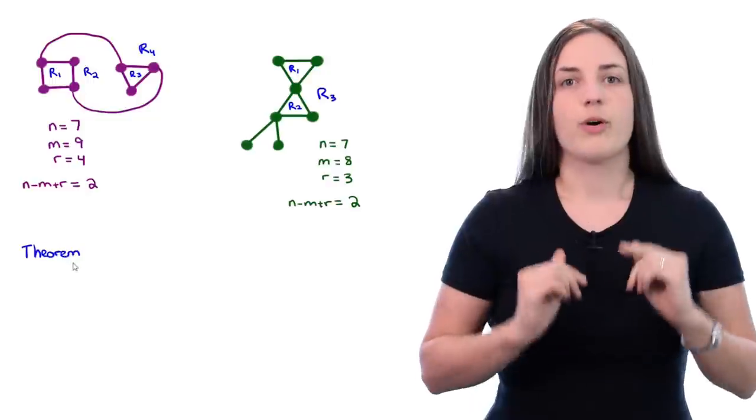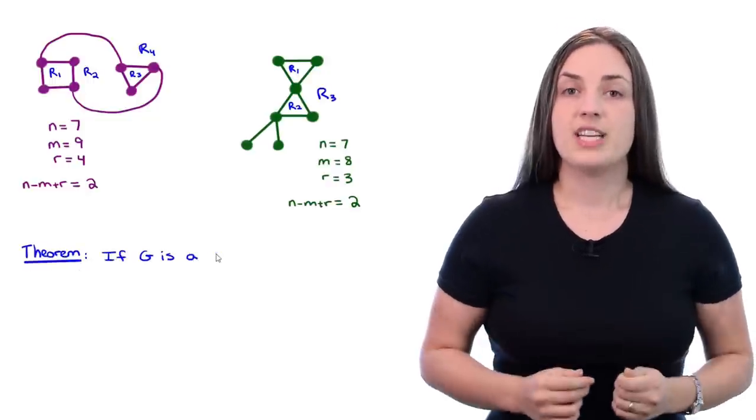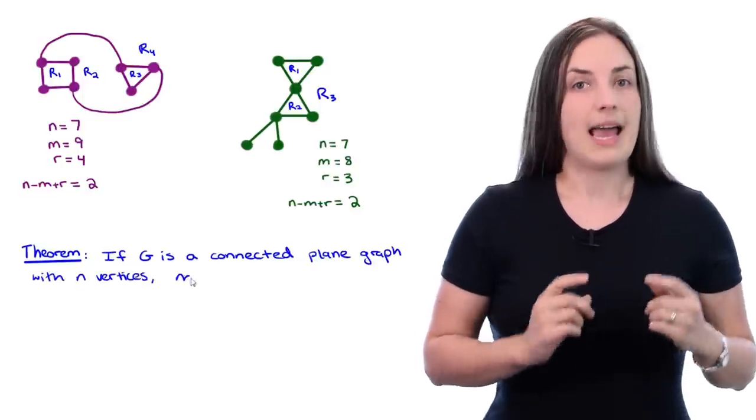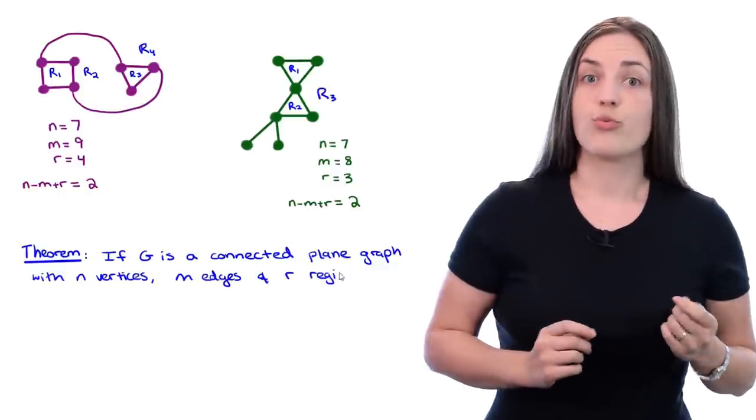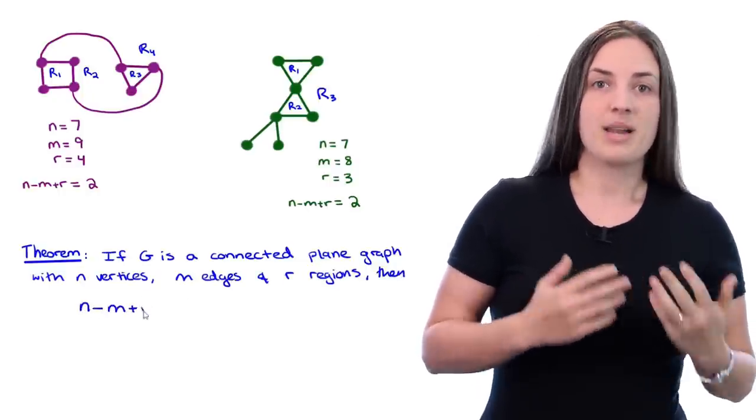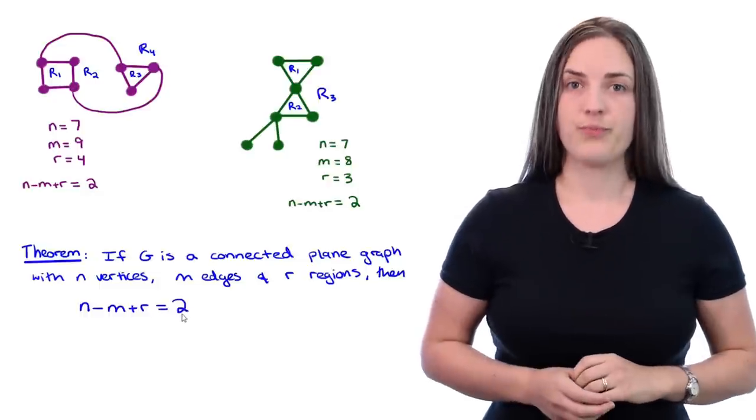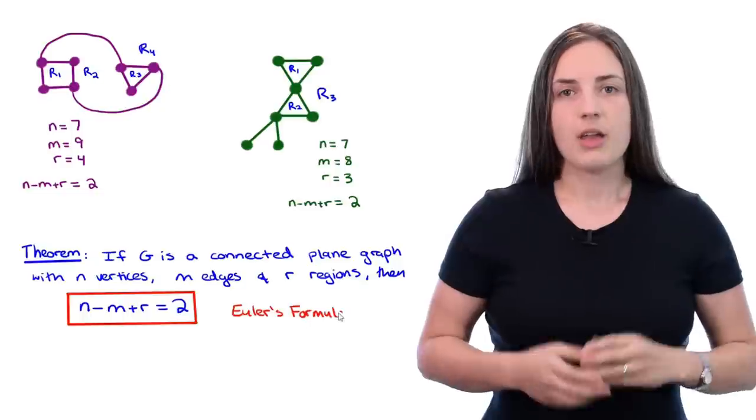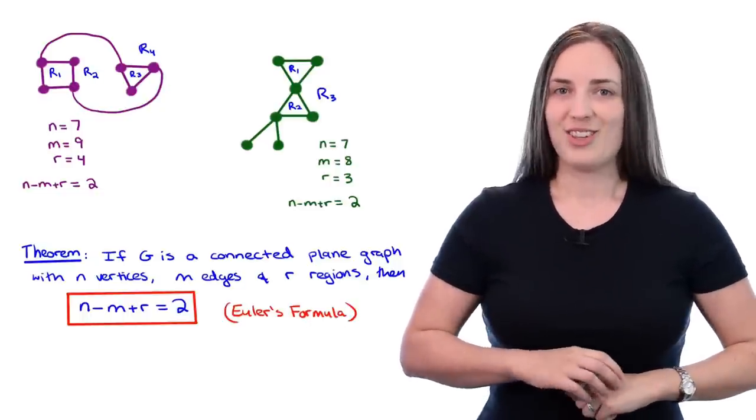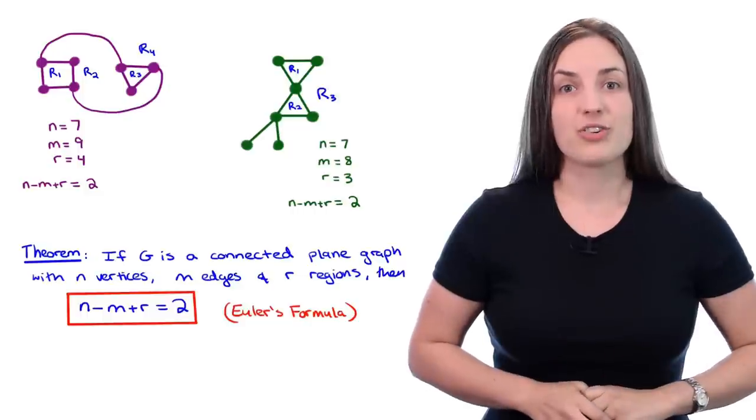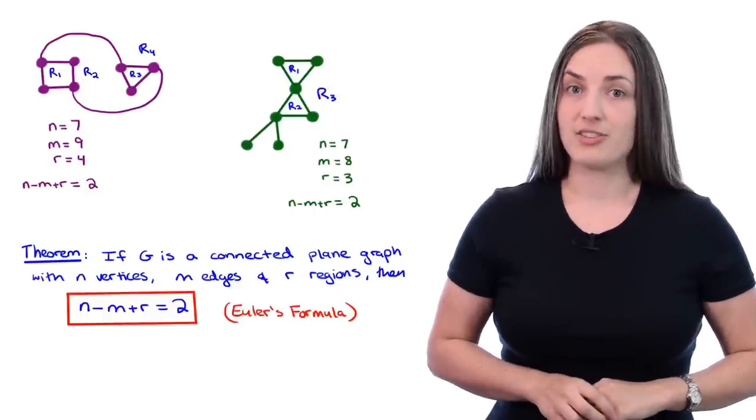So the theorem that we want to prove is that if G is a connected plane graph with N vertices, M edges, and R regions, then N minus M plus R is equal to two. This is actually known as Euler's formula for plane graphs.